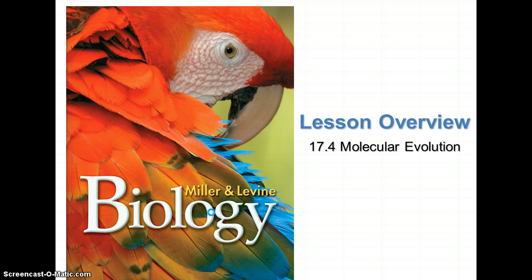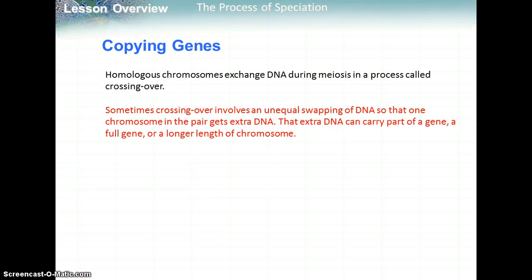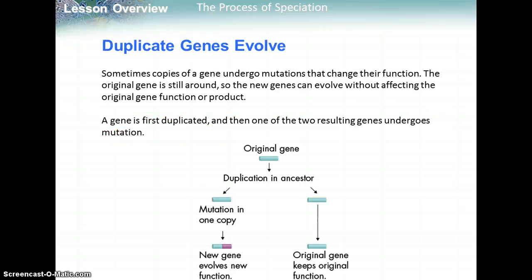Section 17.4 covers molecular evolution. Homologous chromosomes exchange DNA during meiosis via crossing over. Sometimes crossing over involves an unequal swapping of DNA so that one chromosome gets extra DNA, which can carry part of a gene, a full gene, or a longer length of chromosome. Sometimes copies of a gene undergo mutations that change their function, while the original gene is still around so the new gene can evolve without affecting the original function. A gene is first duplicated, and then one of the two resulting genes undergoes mutation and a new gene evolves a new function.